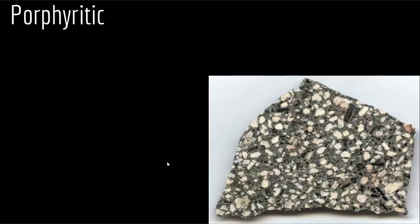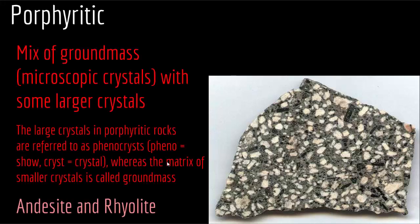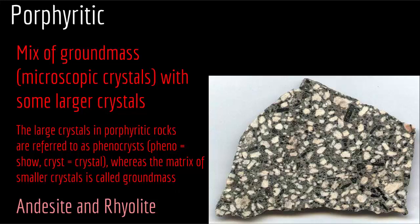The next type is porphyritic igneous texture — a mix of groundmass microscopic crystals with some large crystals. The large crystals in porphyritic rocks are referred to as phenocrysts ('pheno' meaning show, 'cryst' meaning crystals), whereas the matrix of smaller crystals is called the groundmass. As you can see in this example, you have very fine-grained material called groundmass and large-grained material called phenocrysts. When you have this mixture you get a porphyritic igneous texture.